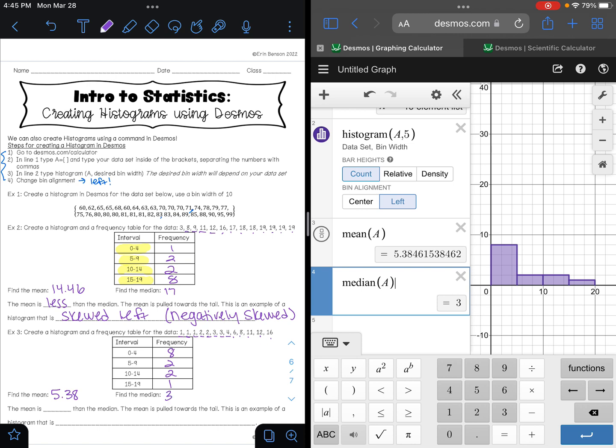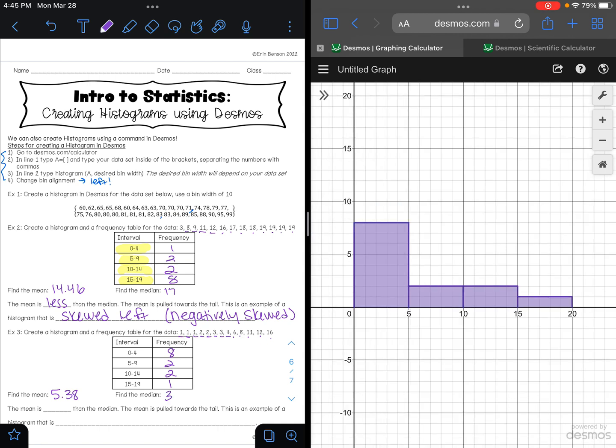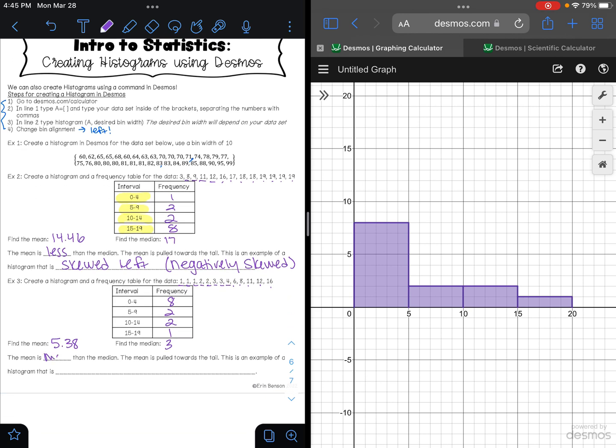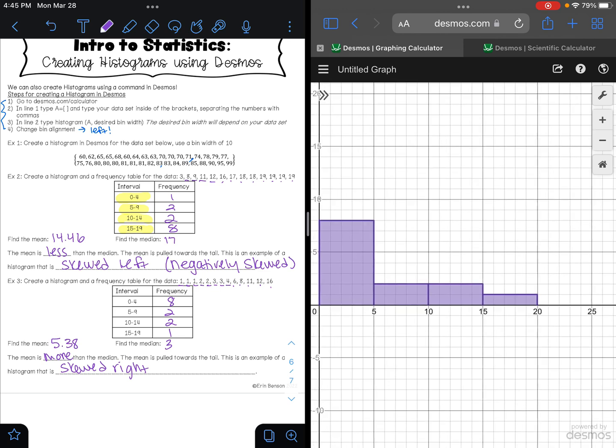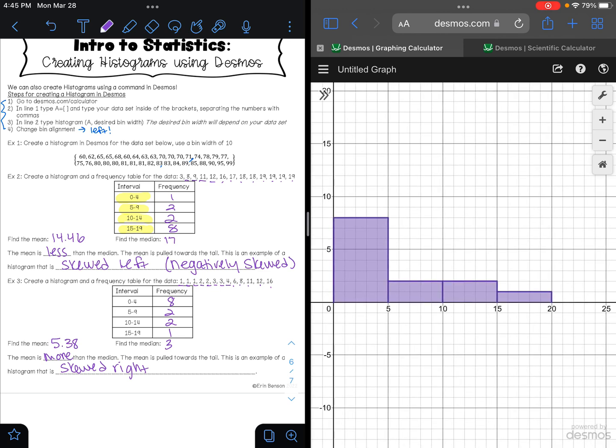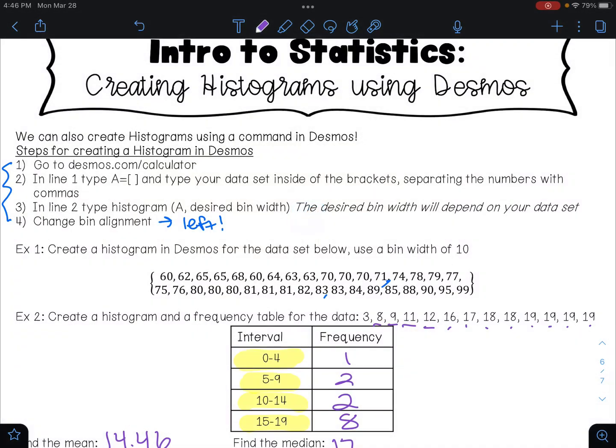So in this case is our mean more or less than our median? Our mean is more than our median because five point three eight is greater than three. This means that the mean is being pulled towards a tail. This is an example of a histogram that is skewed right. So if you look at your histogram over here, your tail would be on the right side. So if we were to draw our dinosaur, our tail would be on the right side, that's where our positive numbers live, so we could say that this is positively skewed.